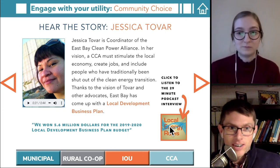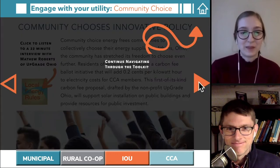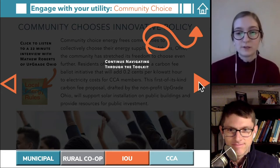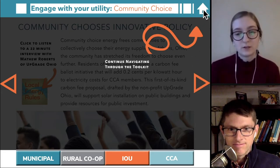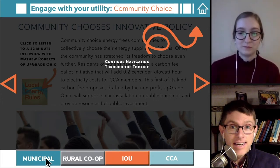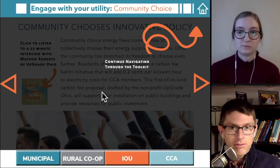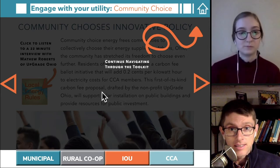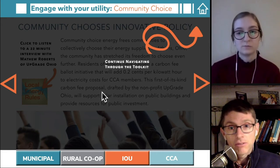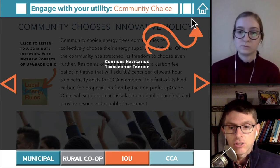Or check out Local Energy Rules on Stitcher, iTunes, or Apple Podcasts. When you arrive at a slide that looks like this, you can either return to the home page or choose a different section to explore along that bottom bar. This is just one tiny slice of the toolkit, which has dozens of different kinds of threads you can follow to get information about what utilities can do, what policies they can adopt, and where different communities have seen those utilities do those things — powerful stories about actions utilities have taken and the success communities have had in getting their utilities to power up.